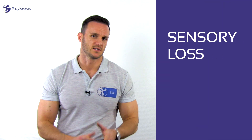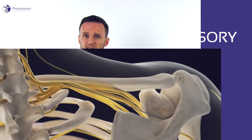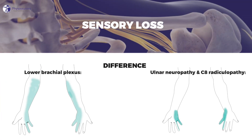Regarding sensory loss: the sensory axons in the lower brachial plexus supply the ulnar side of the hand and the medial side of the forearm. So there is sensory disturbance in the medial forearm and the fourth and fifth finger, but the ring finger is not split like in ulnar neuropathy, where the radial side is spared as it is innervated by the median nerve.